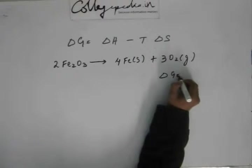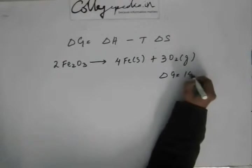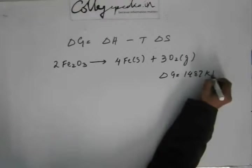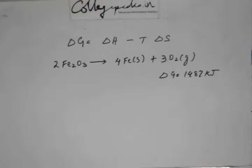Now suppose delta G for this reaction is 1487 kilojoules. As you can see, this is the opposite of rusting. Rusting is spontaneous; it happens on its own. But this reverse reaction will not be spontaneous, and that's why delta G has been given to be positive.